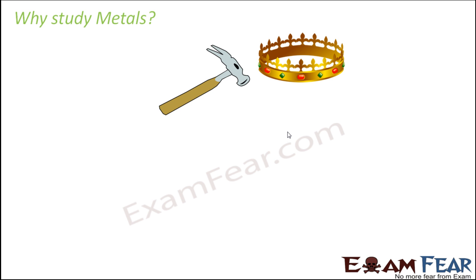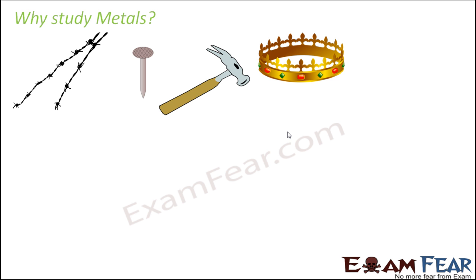The hammer which you use for constructing or repairing things in your house also has a metal part. The tiny nail, which is very important for furniture making and constructing a lot of things — different parts of furniture or instruments are joined together with these tiny nails, made up of iron, which is again a metal. The fencing wires used for protection purposes, to fence fields, gardens, or boundaries, are also made up of metals.